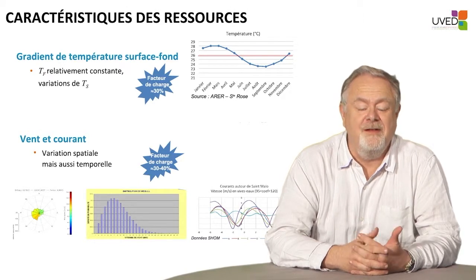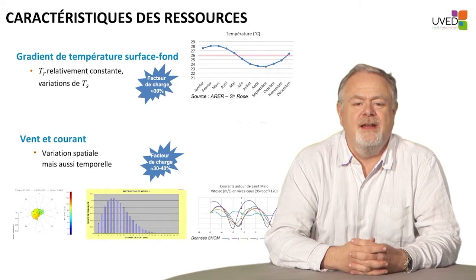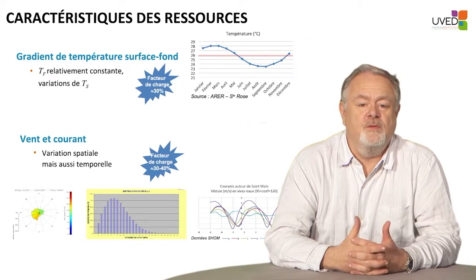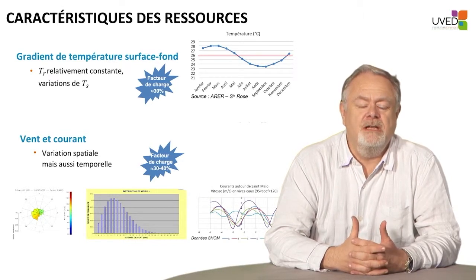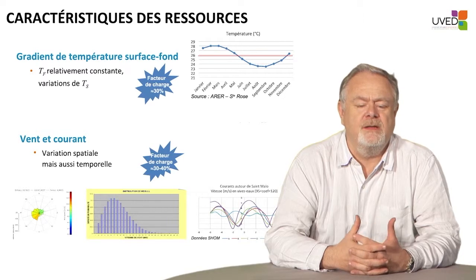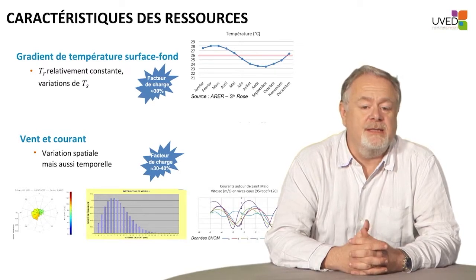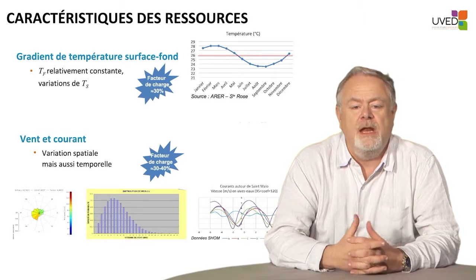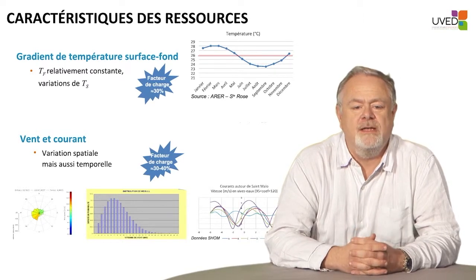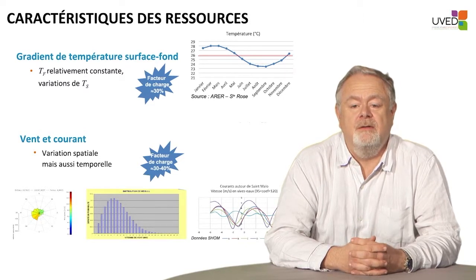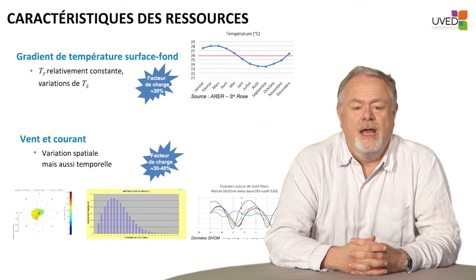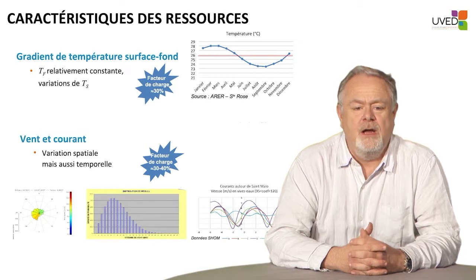The second resource is wind and currents — though not quite the same thing. In wind, the fluid is air; in currents, the fluid is water. But the way the plant operates is relatively similar, and very often the two are associated. Again, we see a space and time variation here.